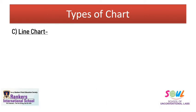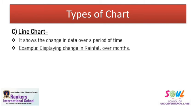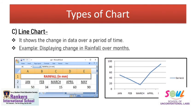The next category is line chart. In a line chart, all your information is represented through single lines. It shows the change in data over a period of time. If you want to show how your information changed over a time interval, you can use a line chart. For example, if you want to display the change in rainfall over months — if your spreadsheet has rainfall information for January, February, March, April, May — you can represent it with a single line. This is your line chart.